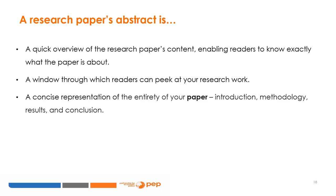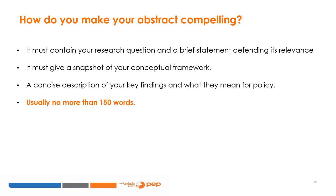What is an abstract? An abstract is a quick overview of the research paper's content, enabling readers to know precisely what the paper is addressing — a window through which readers can peek at your research work, and a concise representation of the entirety of your paper. David Evans of the Center for Global Development has an interesting perspective on how to write a compelling abstract for your development research paper. You will see the reference to his piece at the end of this PowerPoint — it is freely available online and I encourage you to read it.